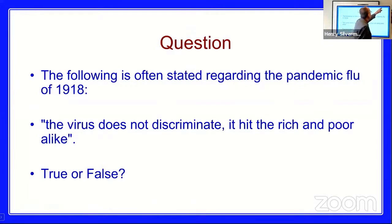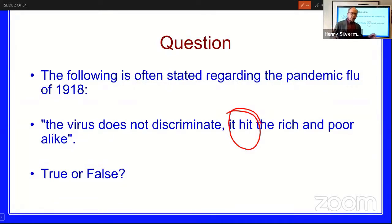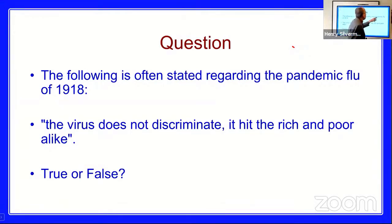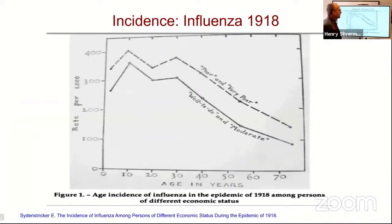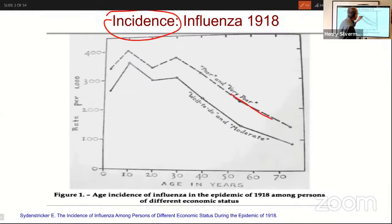I think the issue is: what do we mean by the word 'hit'? Does the virus not discriminate? Well, the virus itself does not discriminate, but the issue is people's circumstances when they are exposed to the virus. Looking at research from the 1918 pandemic, we can see the incidence curve — the poor and very poor versus the well-to-do and moderate.